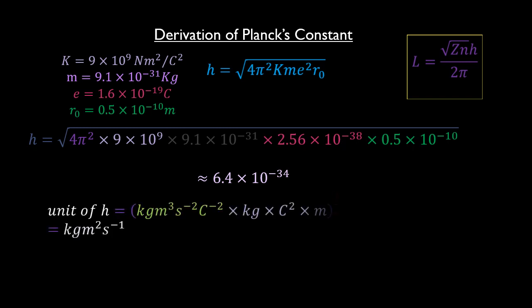So, the unit of h is given by the unit of the electrostatic constant, which is Newton's meter squared per coulomb squared, which in base units is kilograms meters cubed per second squared per coulomb squared, times the unit of mass, which is kilograms, times the unit of the square of the charge, which is coulomb squared, times the unit of distance, which is meters, all raised to the power one-half, which is another way of representing the square root. When you simplify, you get kilograms meters squared per second.